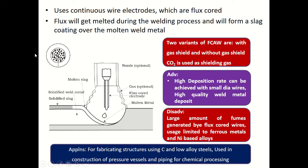The flux will get melted during the welding process and will form a slag coating over the molten weld metal. You can see the molten metal here, and this drop of slag gets deposited and covered over the molten weld metal.